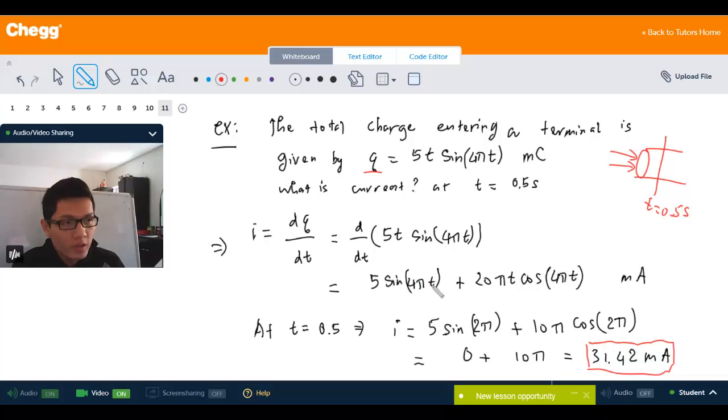And we have the time t for the current. And you want a specific time at t equals 0.5. So plug in t equals 0.5 in this expression we just found here. And you can find that this term becomes 0 because sine of 2 pi is 0 and cosine of 2 pi is 1. So we end up with 10 pi, and 10 pi is actually 31.42, and the unit is milliamps.